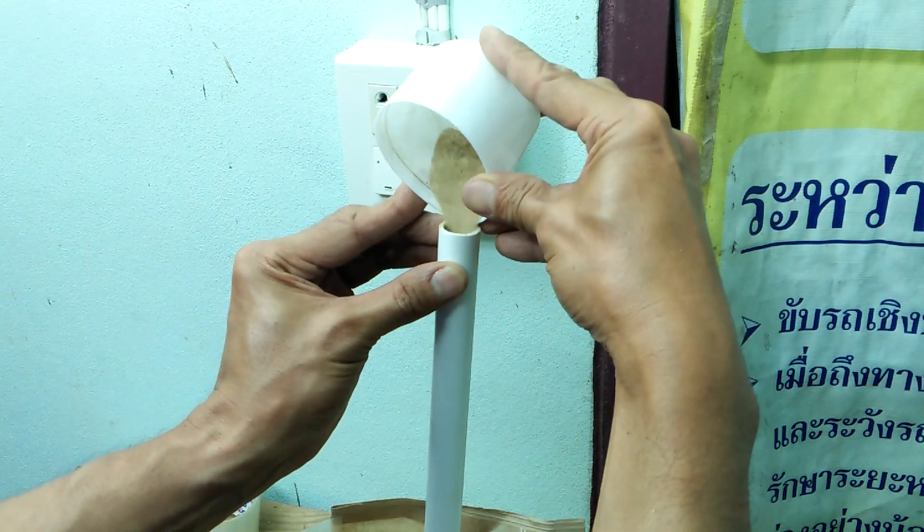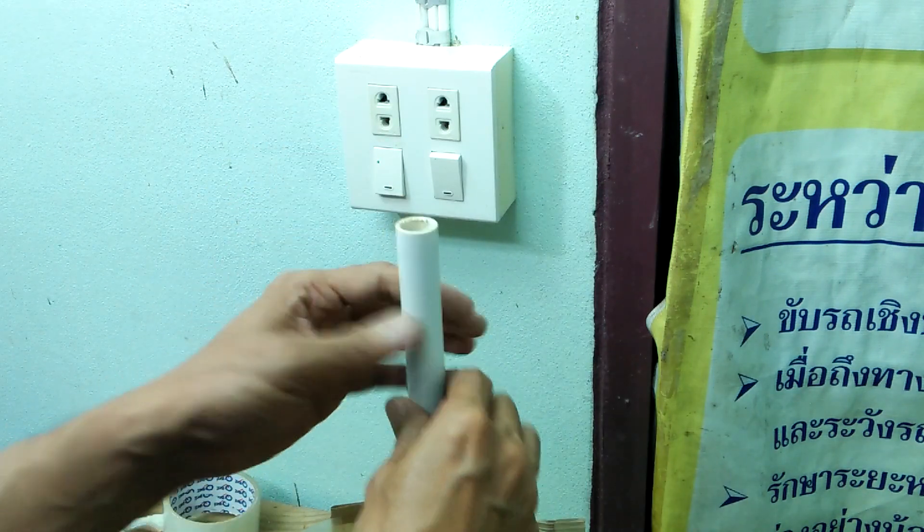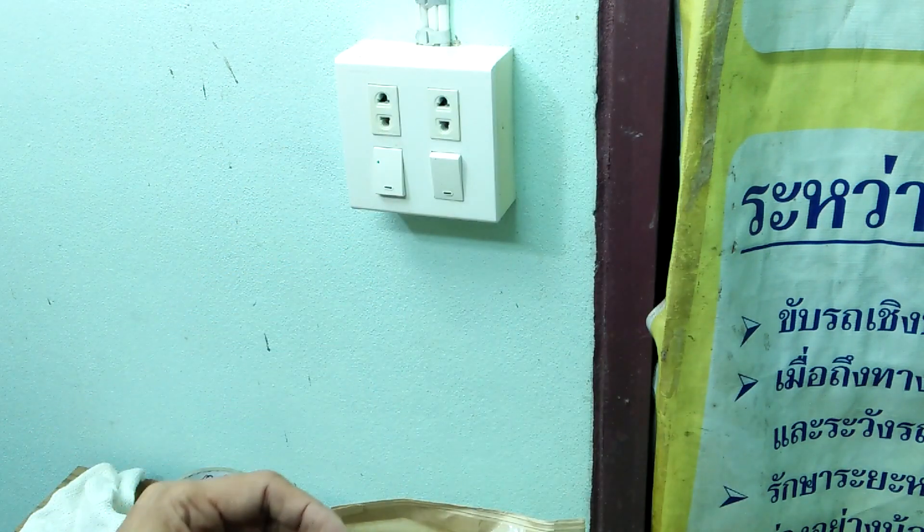To bend the PVC pipe, I filled it with dry sand. The sand will prevent it from kinking.